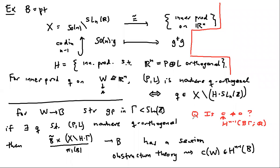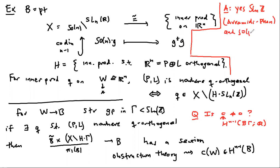The answer to whether the class is non-zero is yes for SL(n,Z) — this is a theorem of Avramidi and Fan, though they don't state it in the language of characteristic classes — and also for SO(p,q,Z), which is the main theorem. It remains unknown for the symplectic group SP(2g,Z). Here p being odd gives some indication this is not a trivial matter.